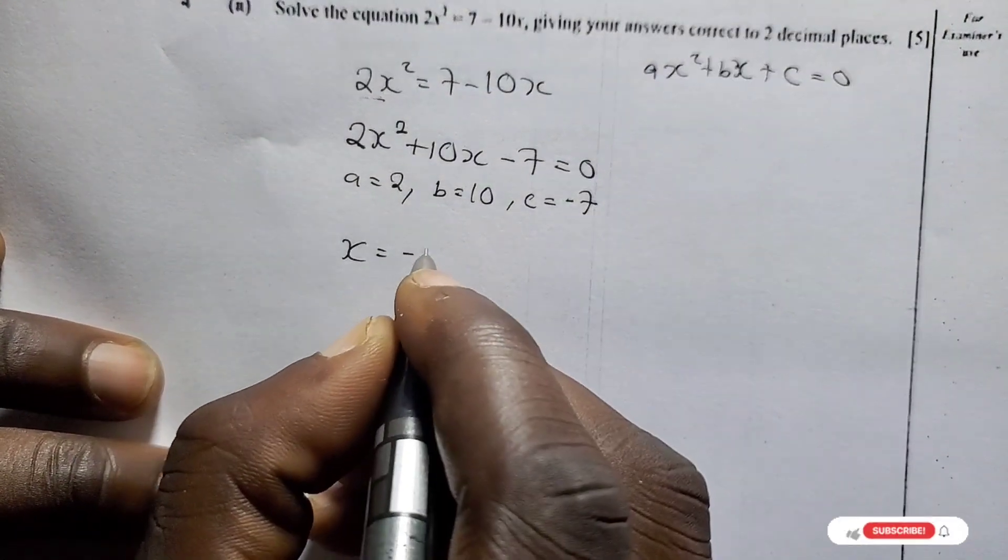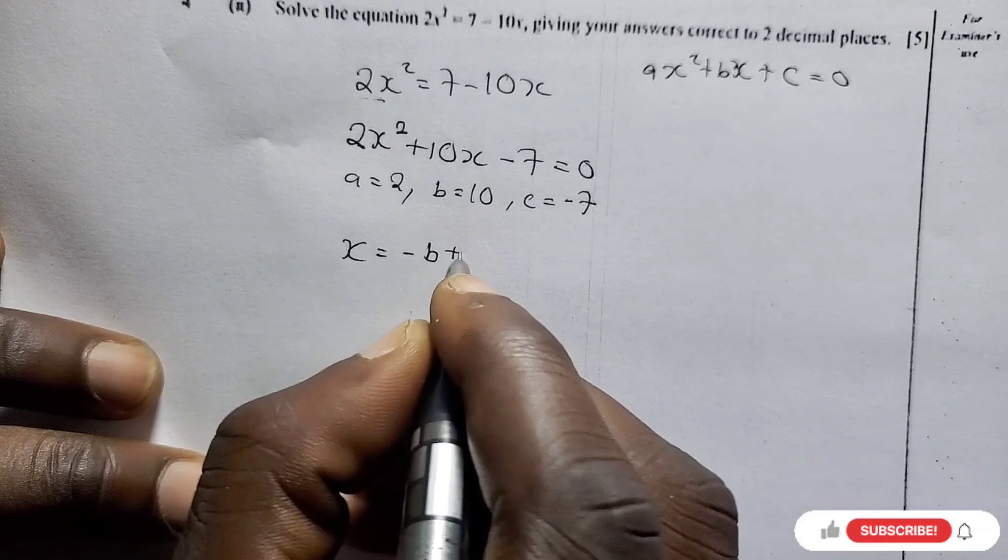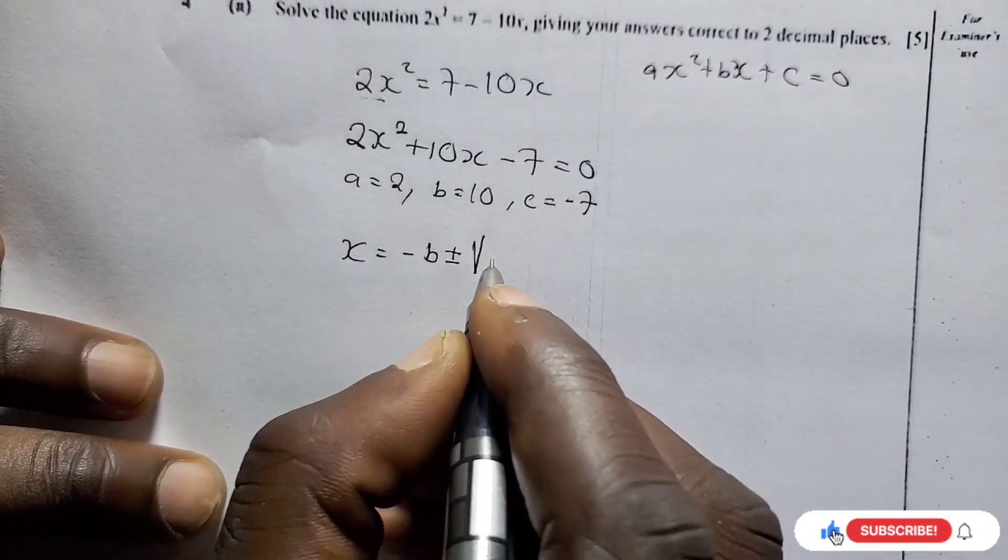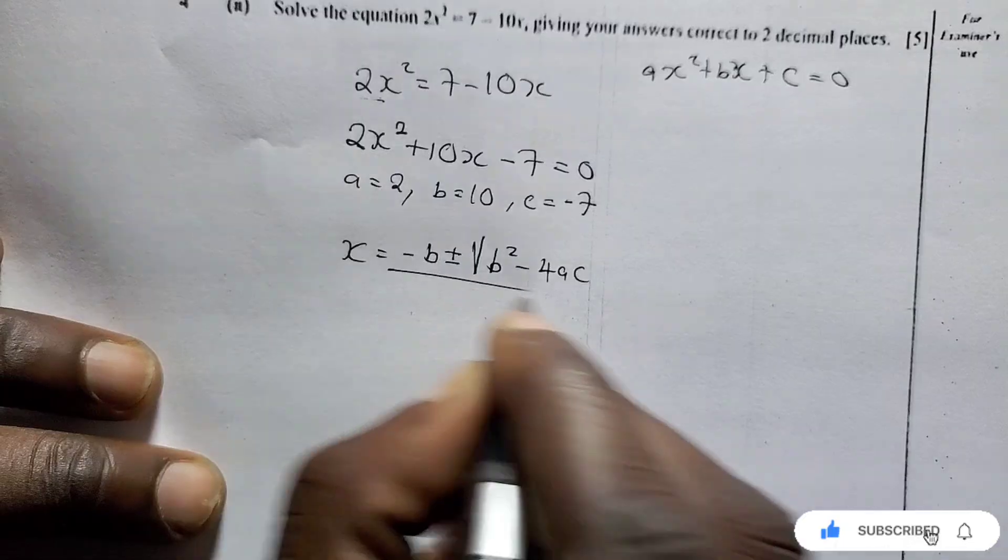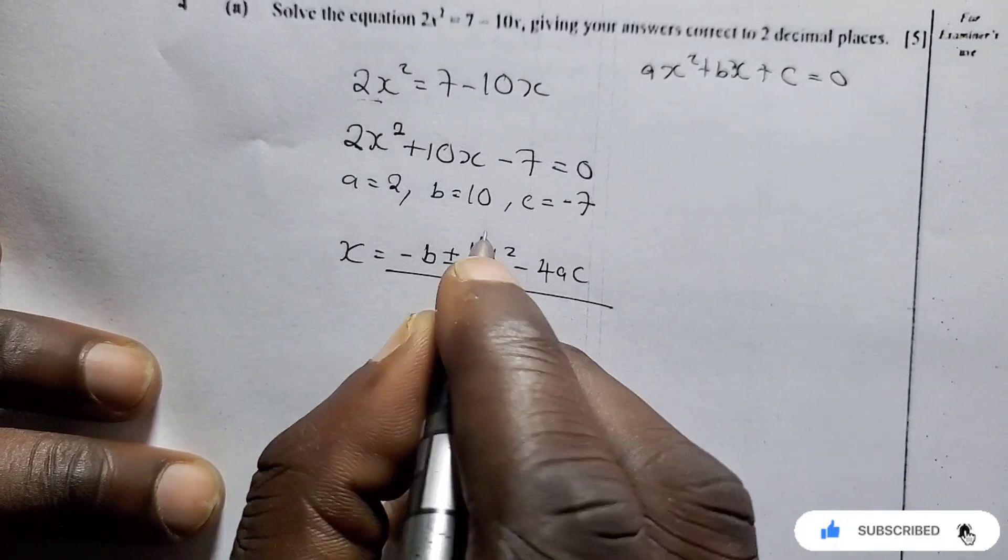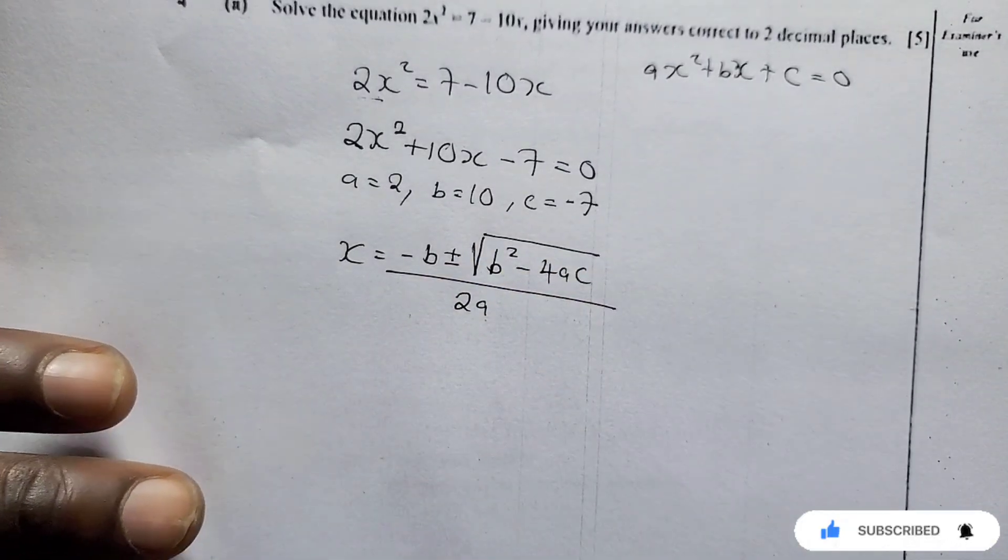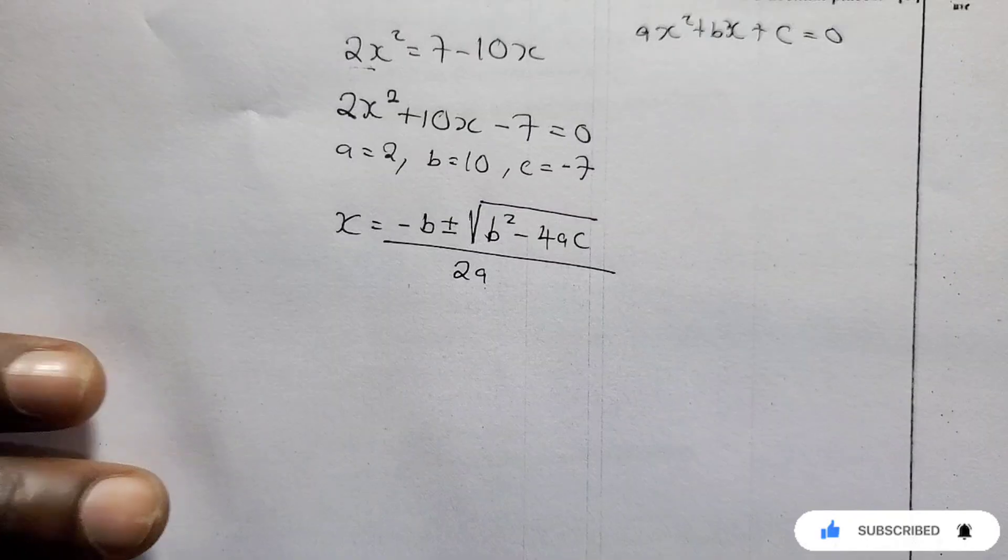Then we can write down our formula. X equals negative B plus minus the square root of B squared minus 4AC over 2A. Remember, this is the square root.